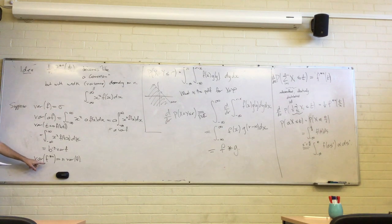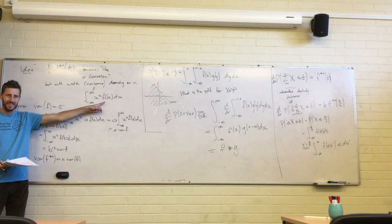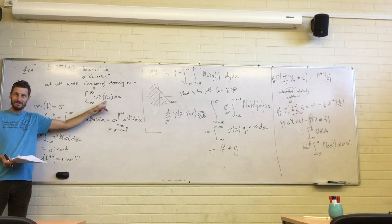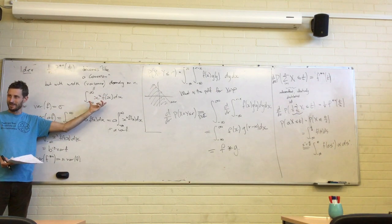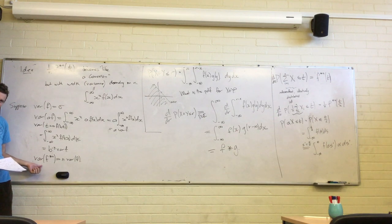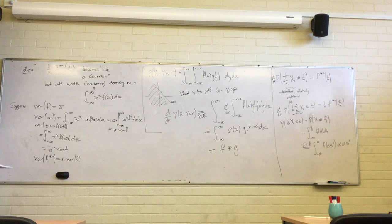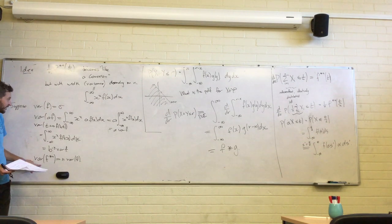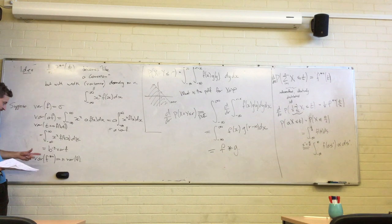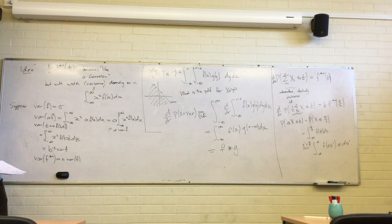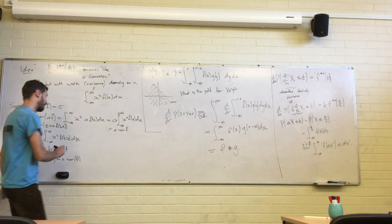If you literally try to do this directly, it looks insane — you've got some n-fold iterated integral. The trick is to do it by induction, and there's also a nicer approach: use the Fourier transform.